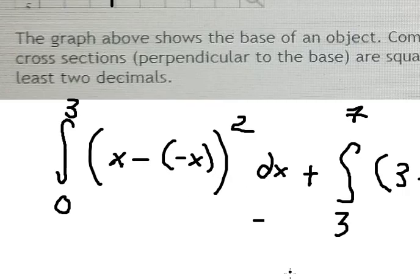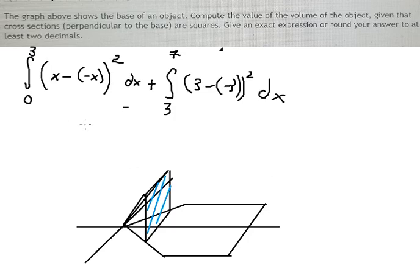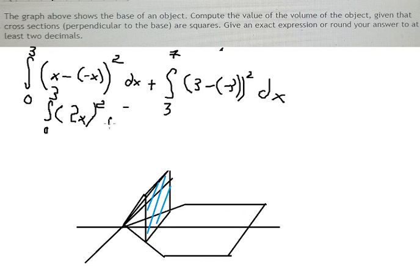Now we just calculate the two integrals. For the first one, negative negative gives us positive, so we have 2x, and squaring that gives us 4x squared. The integral from 0 to 3 of 4x squared, which we can also write as 4 times x squared.